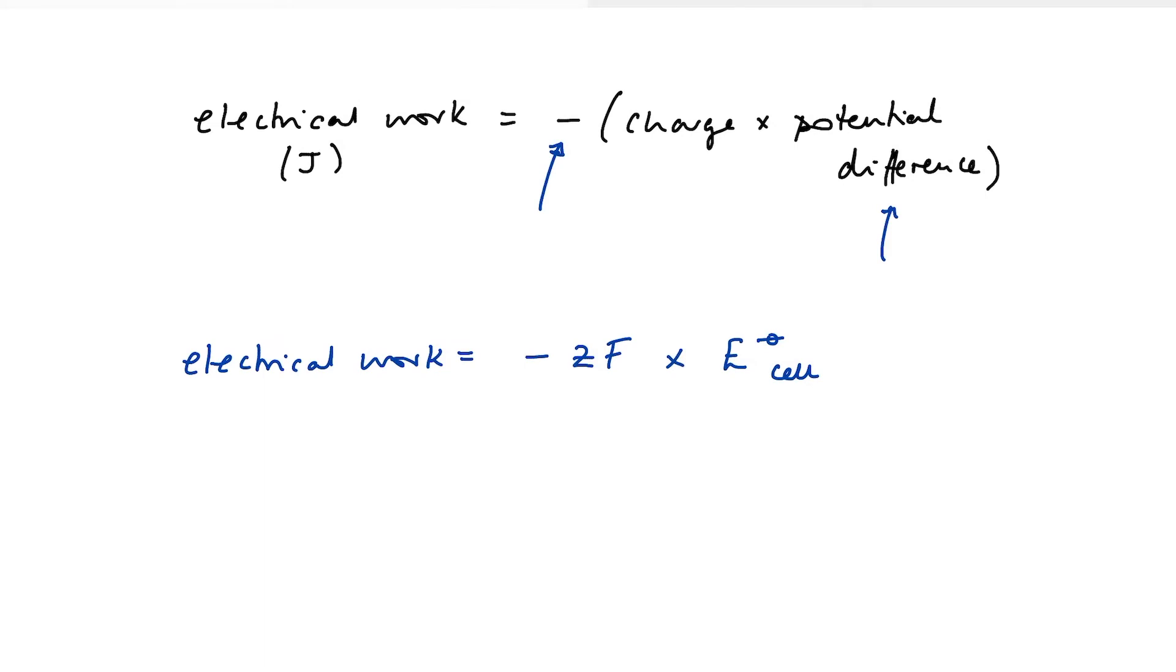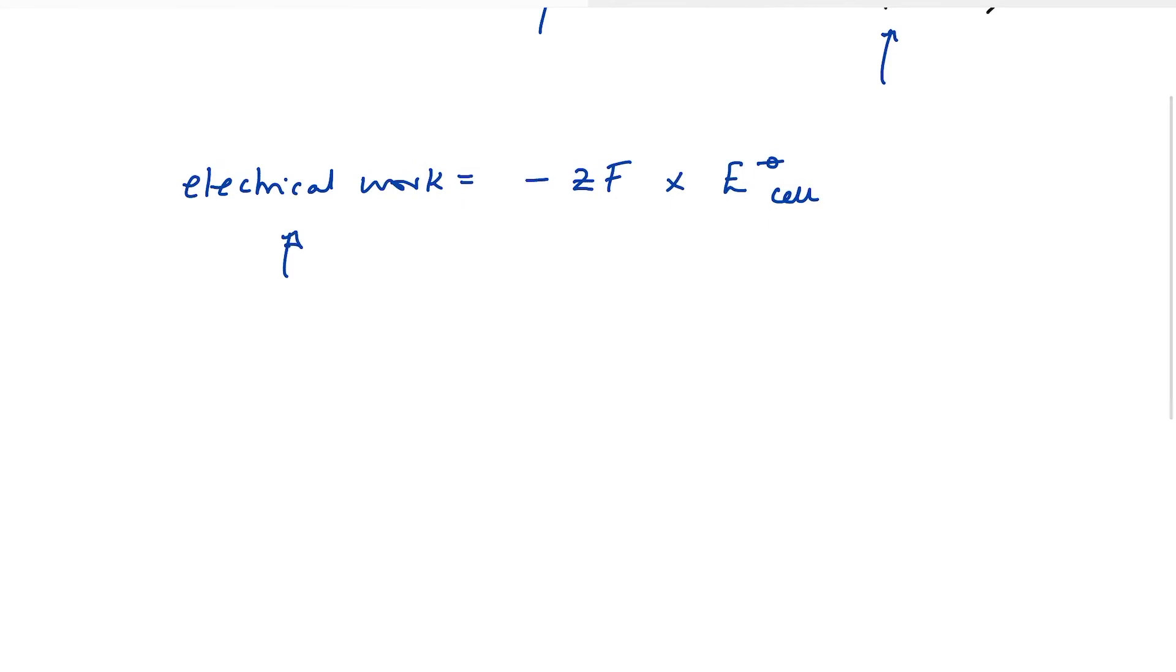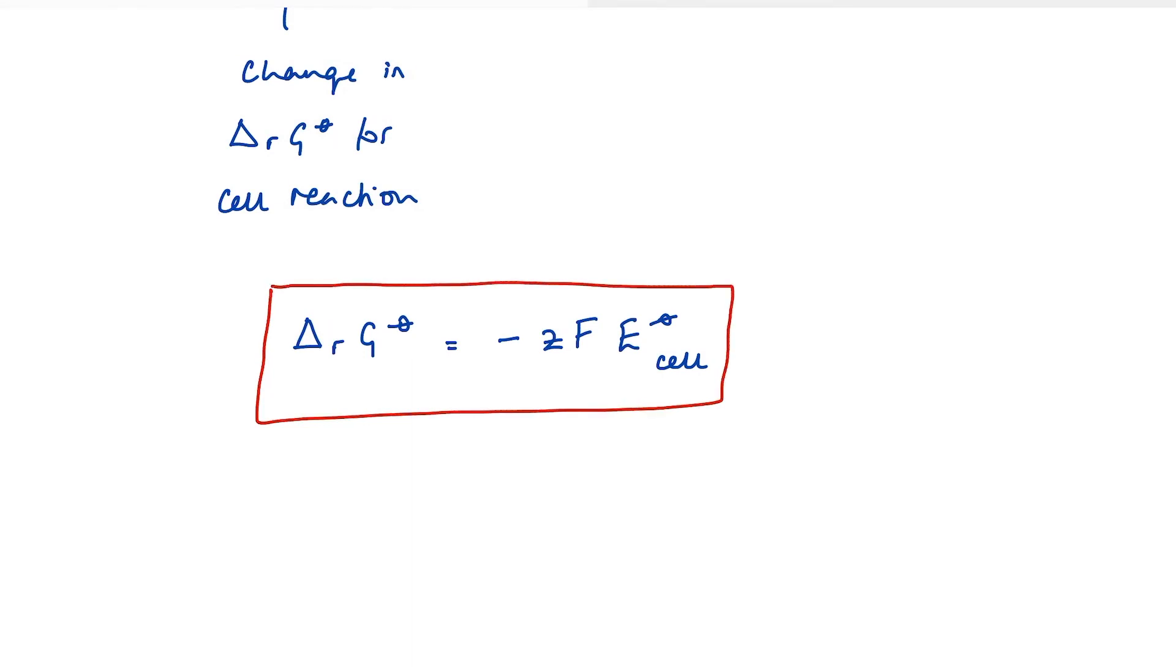We're talking here about the potential difference between my two half cells. So that essentially is going to be E cell. And it's negative because the system is going to lose energy as it does work. So combining those two equations, we can say that electrical work is equal to the charge, which we know is minus ZF multiplied by potential difference, which for our reaction is E cell, the maximum potential difference between the two half cells. Electrical work comes from the change in Gibbs energy for our cell reaction because, as we've just seen, Gibbs energy combines both entropy and enthalpy to tell us the maximum amount of work that a chemical reaction, in this case our electrochemical cell, can perform.